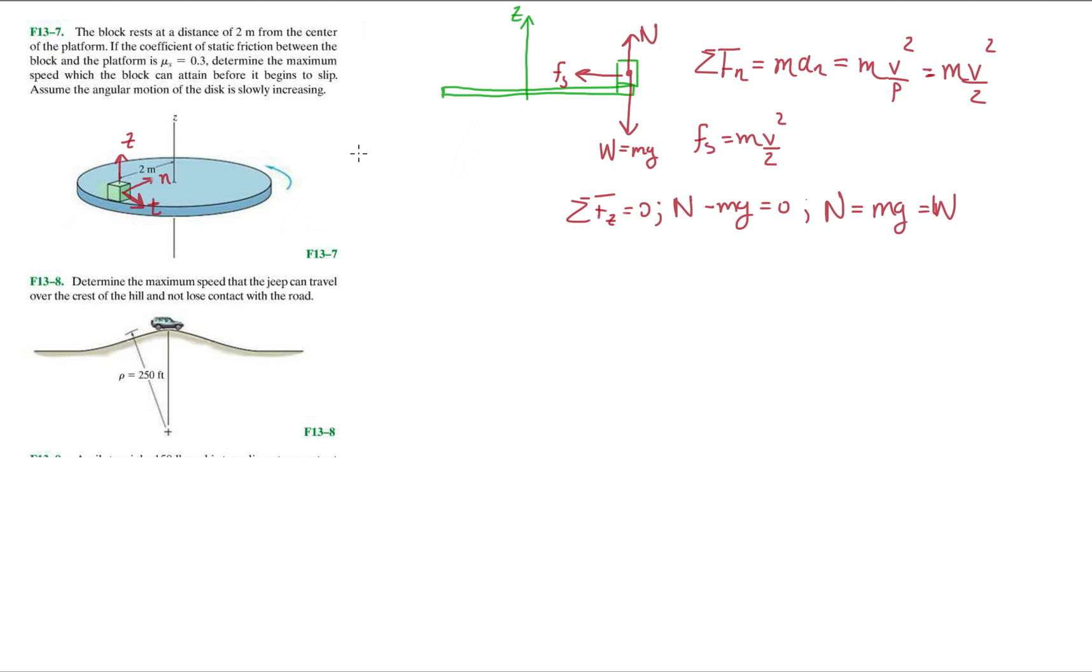On the left-hand side, we're going to add up all the forces in the normal direction. We're going to have Fs equals m V squared over 2. But what is Fs? Fs is just the static friction coefficient times the normal. And we know that the normal is the weight, which we can also write as mg.